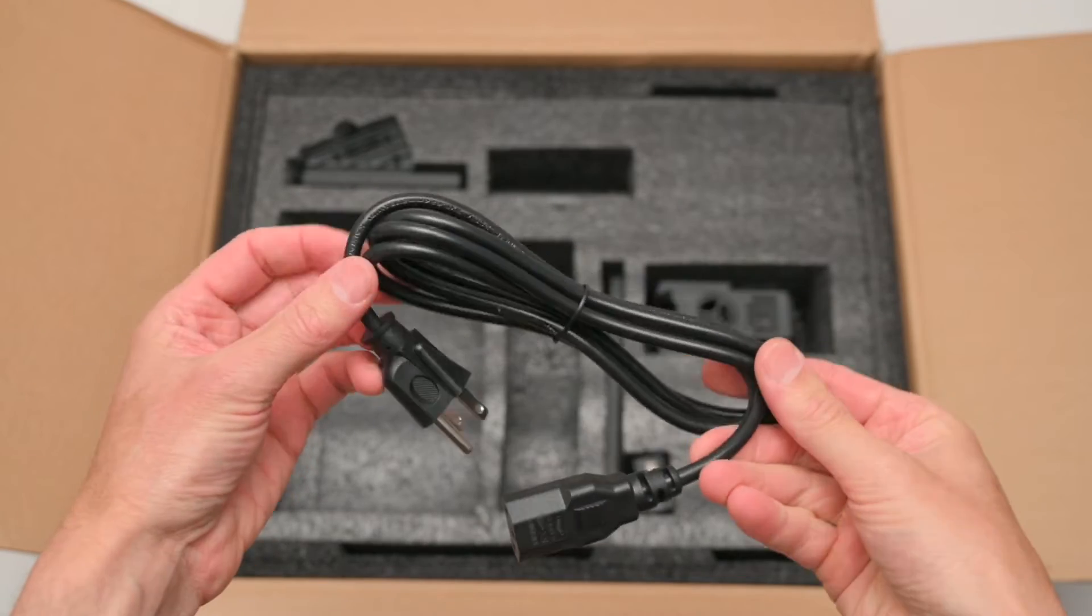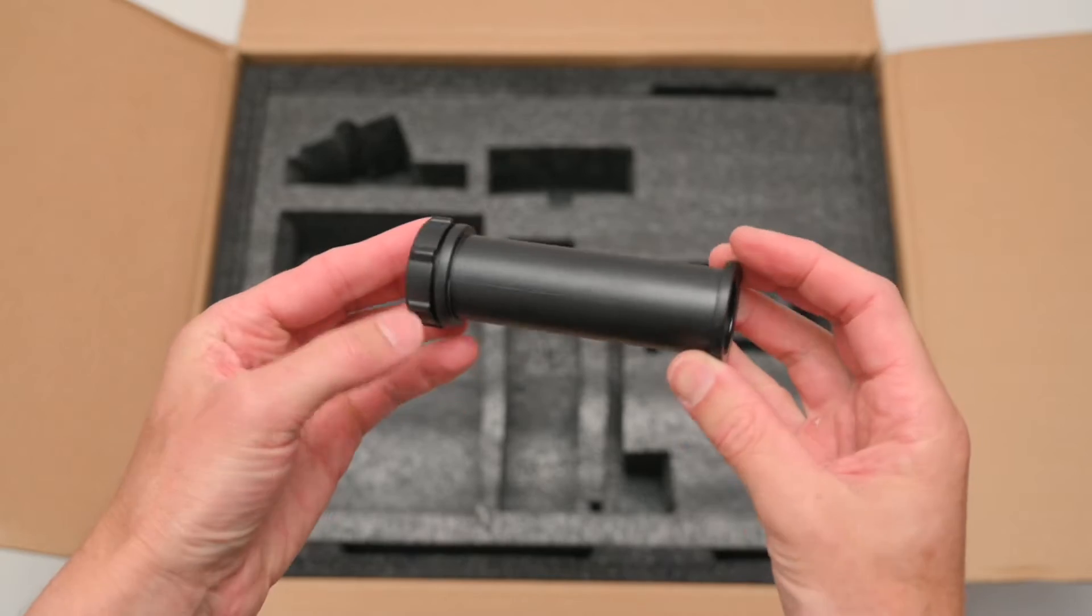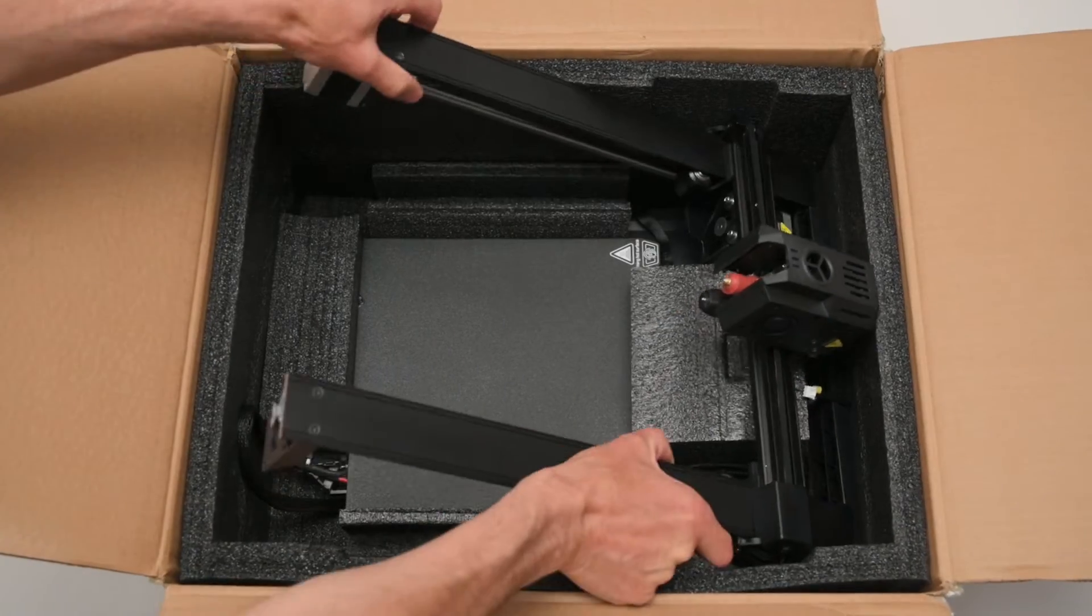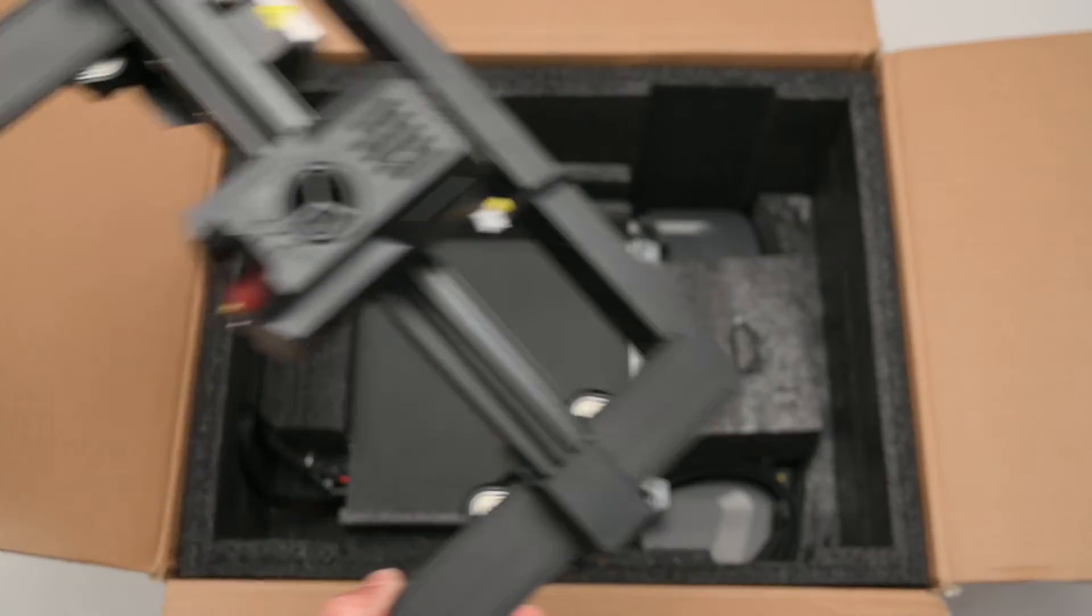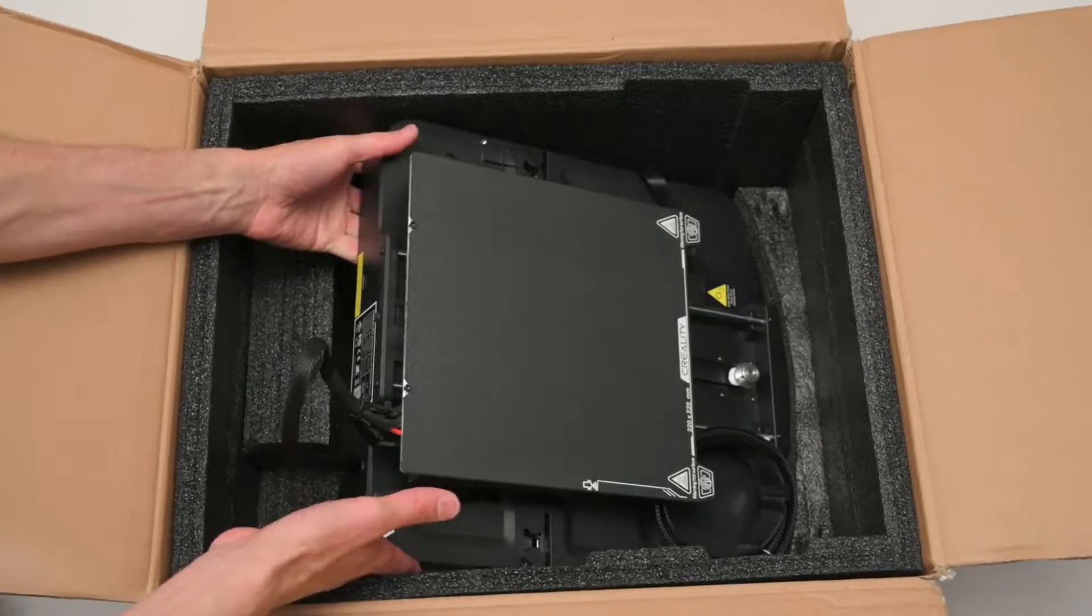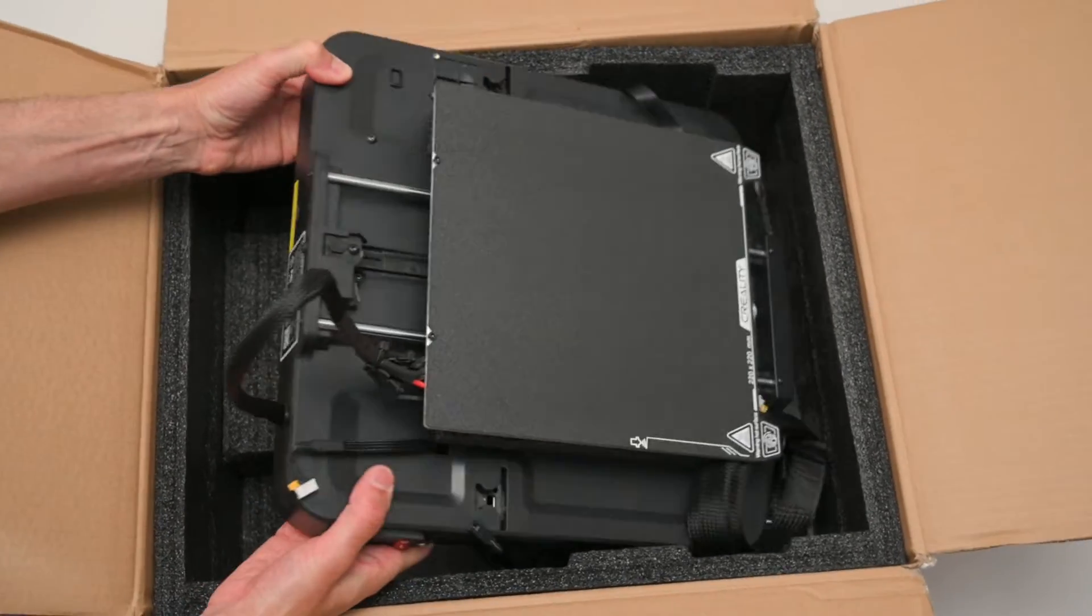There's the power cable, the touch screen, a spool holder with a filament run out sensor, the top gantry with pre-installed dual Z axis lead screws and the hot end and extruder. And finally we have the base with a Y axis and bed platform installed.